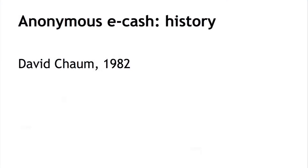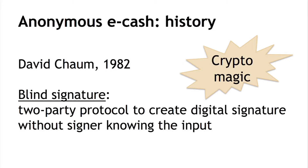Let's look at the history of anonymous eCash. Even though questions around Bitcoin anonymity are controversial, this is not the first time we've thought about anonymous cryptocurrencies technically — these efforts have a long history. All the way back in 1982, cryptographer David Chaum proposed blind signatures, which helped him develop anonymous electronic cash. Blind signatures are a two-party protocol where one party produces a digital signature of some input without actually knowing what that input is.